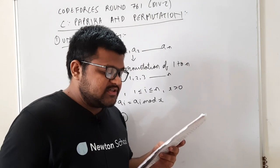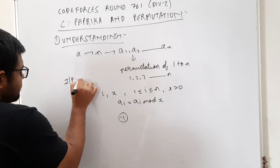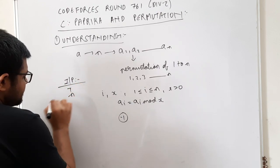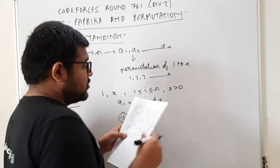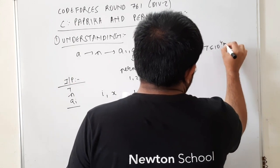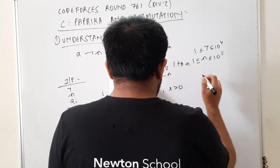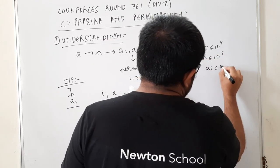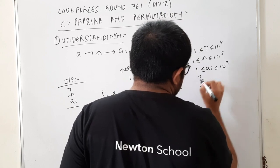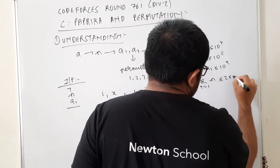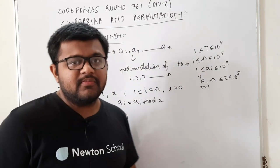आगे permutation की definition example के साथ दी गई है। Input format: पहले number of test cases, फिर हर test case में N (size of the array), और फिर array A के N elements। Constraints: test cases की value 10^4 तक, N की value 10^5 तक, A[i] की value 10^9 तक, और summation of N over all test cases less than equal to 10^5। तो हमें minimum number of operations बताने हैं, और अगर impossible है तो minus 1 print करना है।